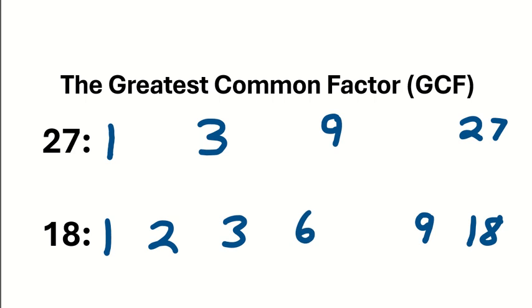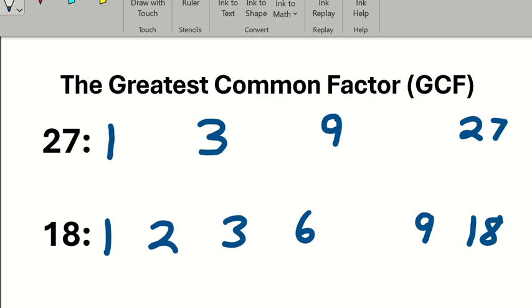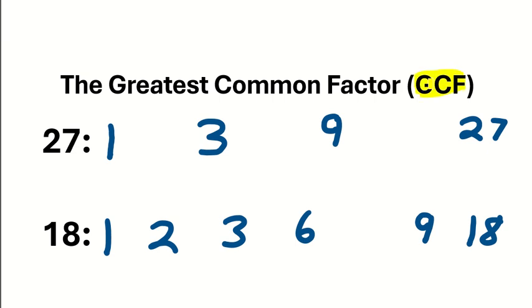Now we've listed the factor pairs for both numbers and to find the greatest common factor we simply have to look at the number that is the greatest value on both lists and we know that number is nine. Thus the GCF or the greatest common factor of 27 and 18 is nine.